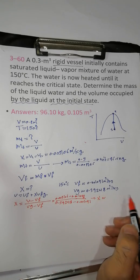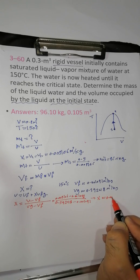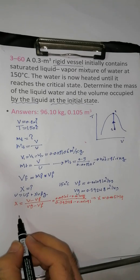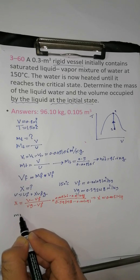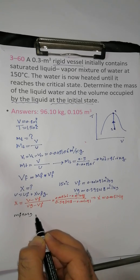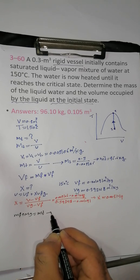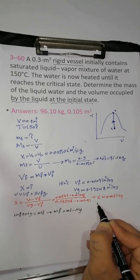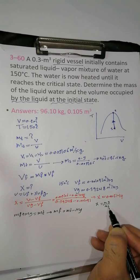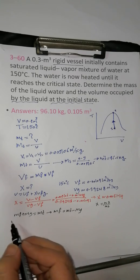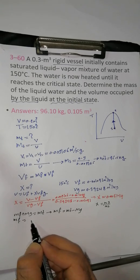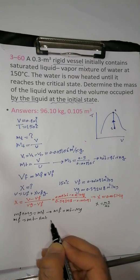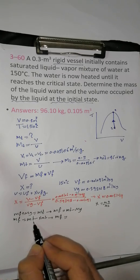The total mass equals Mf plus Mg. Solving: Mf equals M_total minus Mg, so Mf equals M_total minus x times M_total, giving Mf equals M_total times (1 minus x).